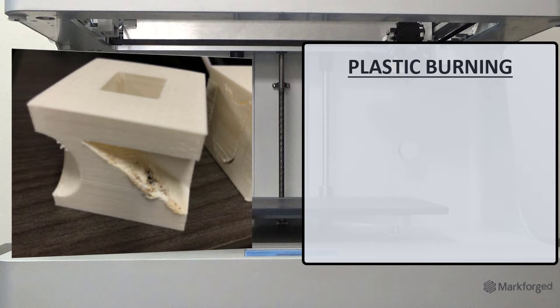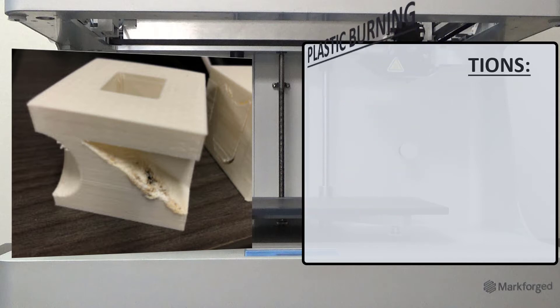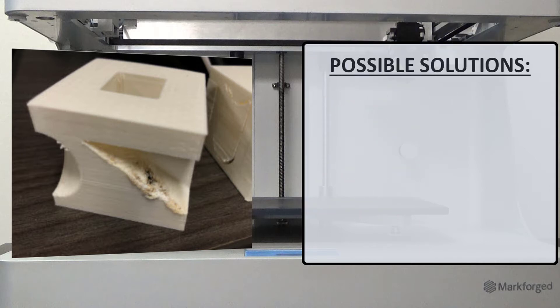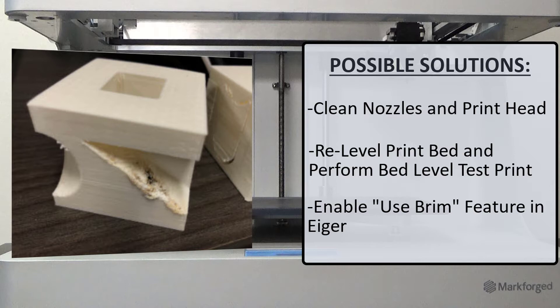Some common causes of this issue could be poor bed leveling, wet material, dirty nozzles, or potentially part warping. The recommended troubleshooting steps would be to clean the nozzles and the print head, then adjust the bed level and run the bed level test print to ensure a good printing environment. If we are still experiencing plastic burning, we can enable the use brim feature in Eiger to help prevent warping.